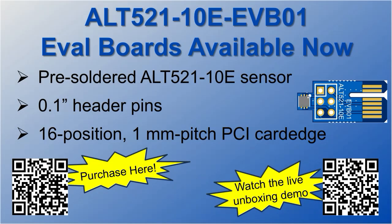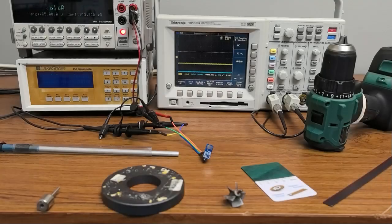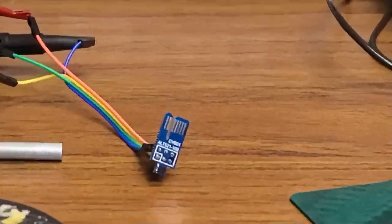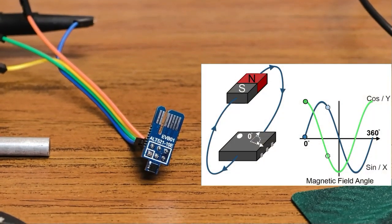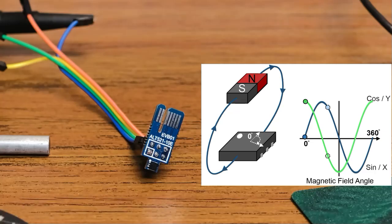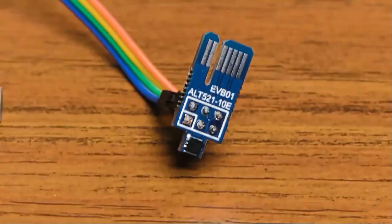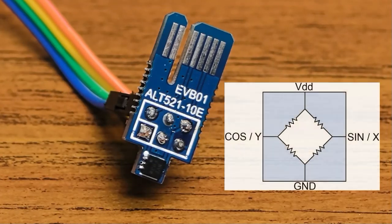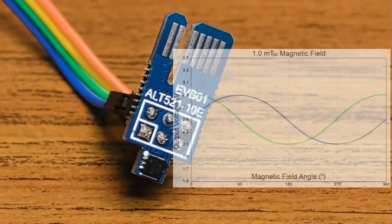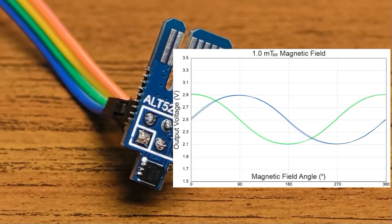Welcome to NVE Corporation's YouTube channel. We're demonstrating our new ALT521-10E, the world's most sensitive ultra-miniature rotation sensors. These are TMR sensors with a tiny footprint, low power consumption, and a ton of sensitivity.